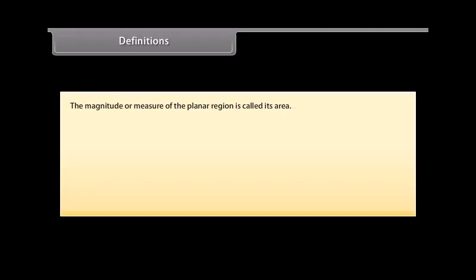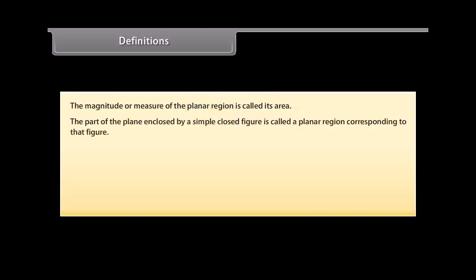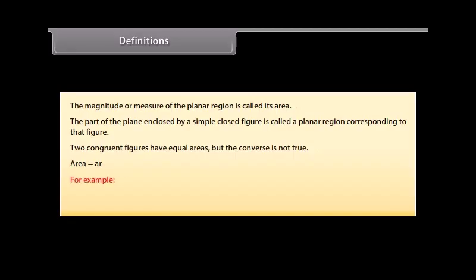The part of the plane enclosed by a simple closed figure is called a planar region corresponding to that figure. Two congruent figures have equal areas, but the converse is not true. The area of a figure can also be denoted by A-R. For example, area of triangle A-B-C can also be written as A-R-A-B-C.